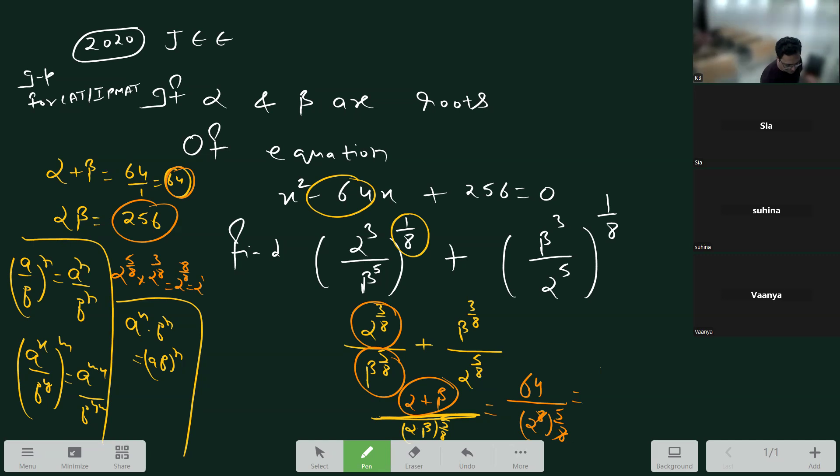They cancel out. 64 divided by 2 to the power 5 is 32. Final answer.